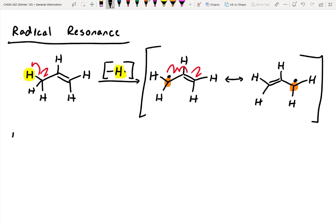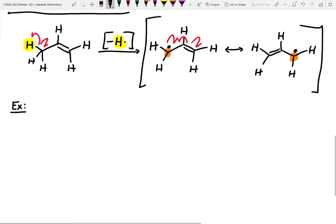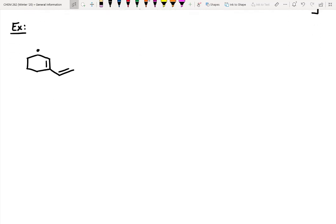Let's try another one — practice the resonance structures. We've got an unpaired electron on the top carbon of this molecule. Let's figure out all of the different resonance structures for this organic radical. Try to show your first arrow coming from the radical; otherwise, if you start moving pi bonds right away, it gets confusing.